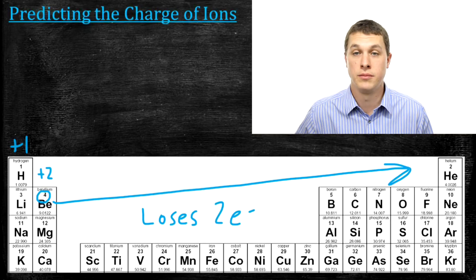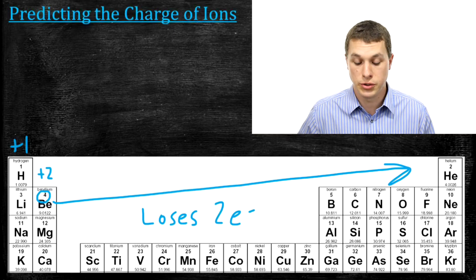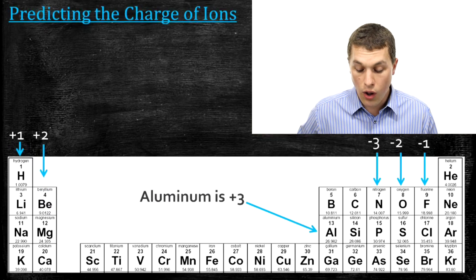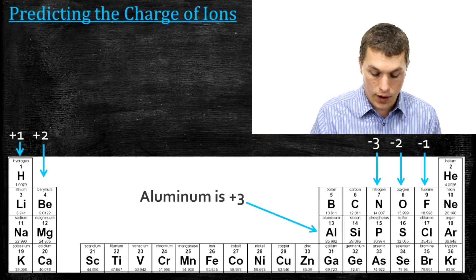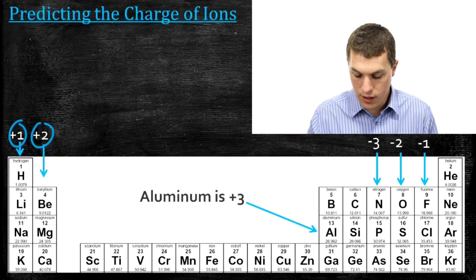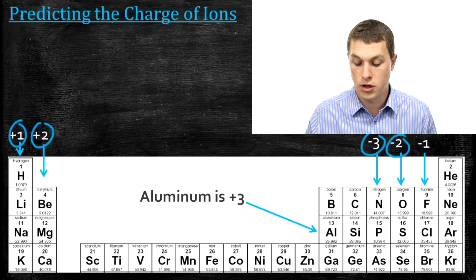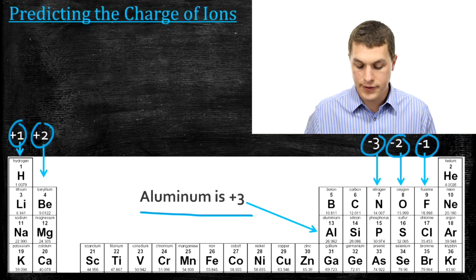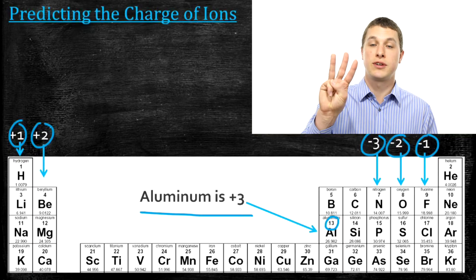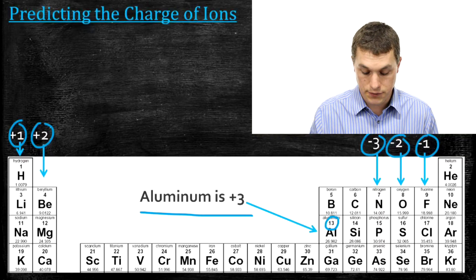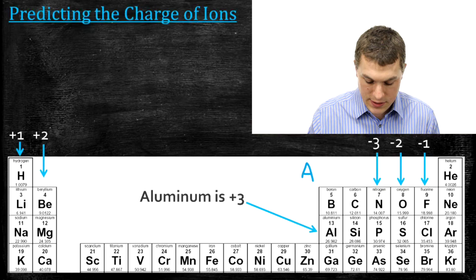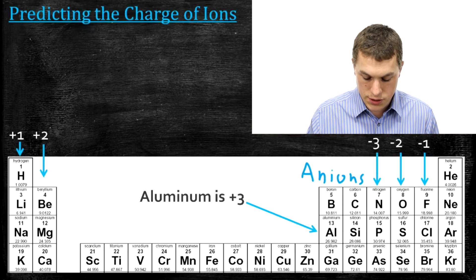The column that our element is in will tell us what charge it will actually have. The first column is plus one, the next column is plus two. On the far left, hydrogen, lithium, sodium, and potassium tend to be positively one charged; the next column positively two. Way over on the right, we get negative three for the nitrogen column, negative two for the oxygen column, and negative one for the fluorine column. One special case: aluminum has 13 protons and electrons in the neutral element, and it tends to lose three electrons to look like neon, so aluminum is positive three. Just like negatively charged ions are called anions, positive ones are called cations.